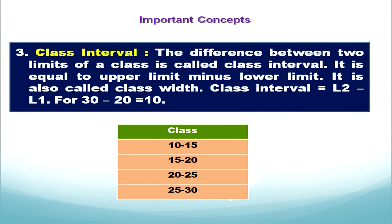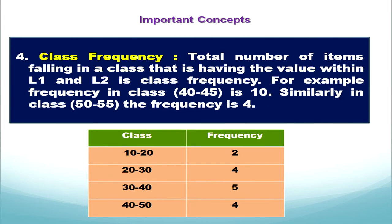The next concept is class frequency. Every class is having a frequency. It shows the total number of items falling in a class — that is, having a value within the lower limit and upper limit. For example, for 10 to 20 the frequency is 2, and for 20 to 30 the frequency is 4.